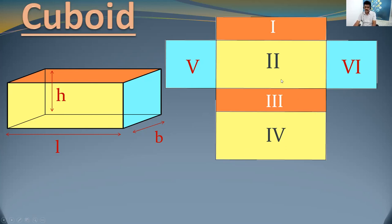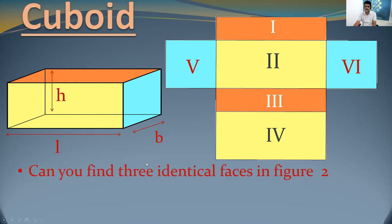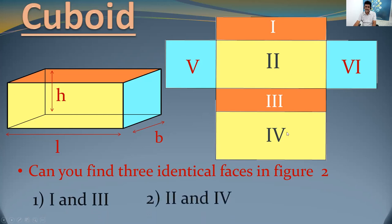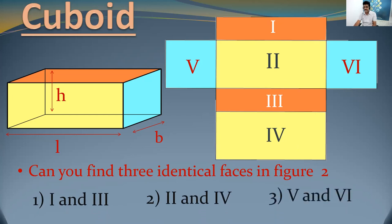Now, can you find three pairs of identical faces in the net diagram? You can see faces one and three are identical. Two and four are identical faces. Five and six are also identical faces. So you must now know about the faces of a cuboid.